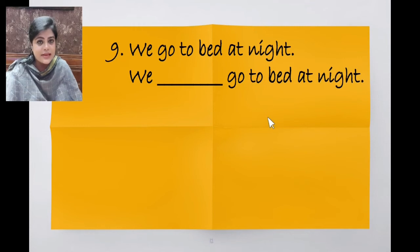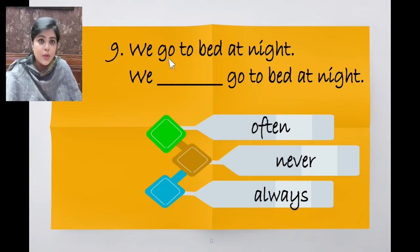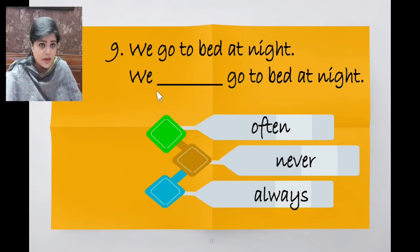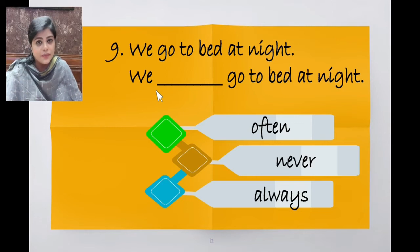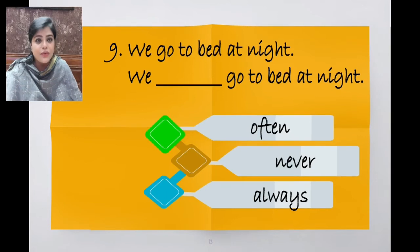We go to bed at night. We dash go to bed at night. Options: often, never, always. We sleep at night only, so the correct answer is always. We always go to bed at night.